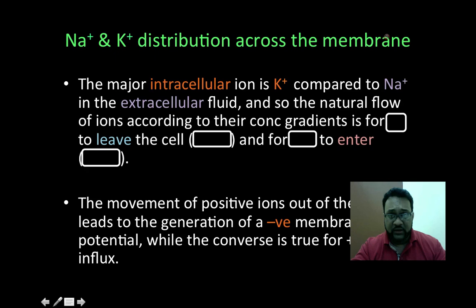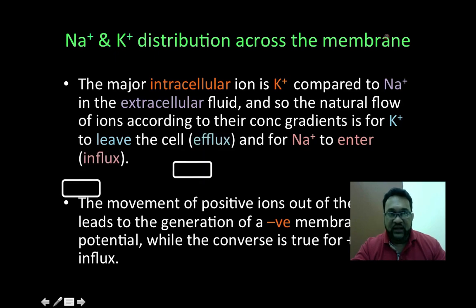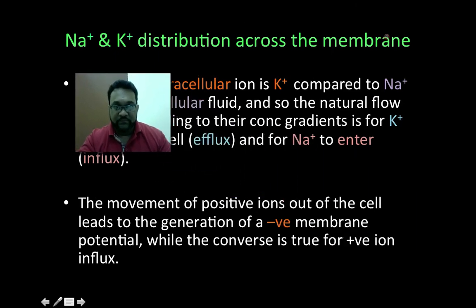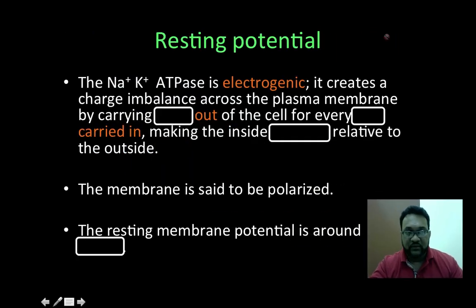Based on that concentration gradient, the natural flow of ions — ignoring the sodium-potassium pump — is as follows: potassium ions would naturally want to leave the cell, and sodium ions would naturally want to enter the cell, based on their concentration gradients. To leave the cell is called efflux, and to enter the cell is called influx. The movement of positive ions out of the cell leads to the generation of a negative membrane potential, while the converse is true for positive ion influx.